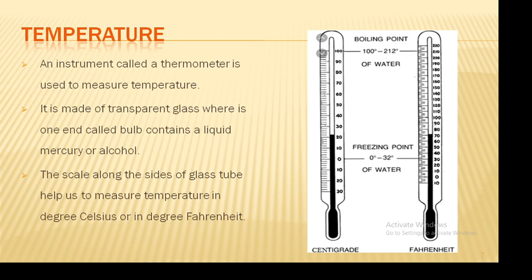Here in this picture, you can see two different thermometers — centigrade and Fahrenheit — which show the boiling point and freezing point of water. The black substance present in the thermometer represents mercury or alcohol.